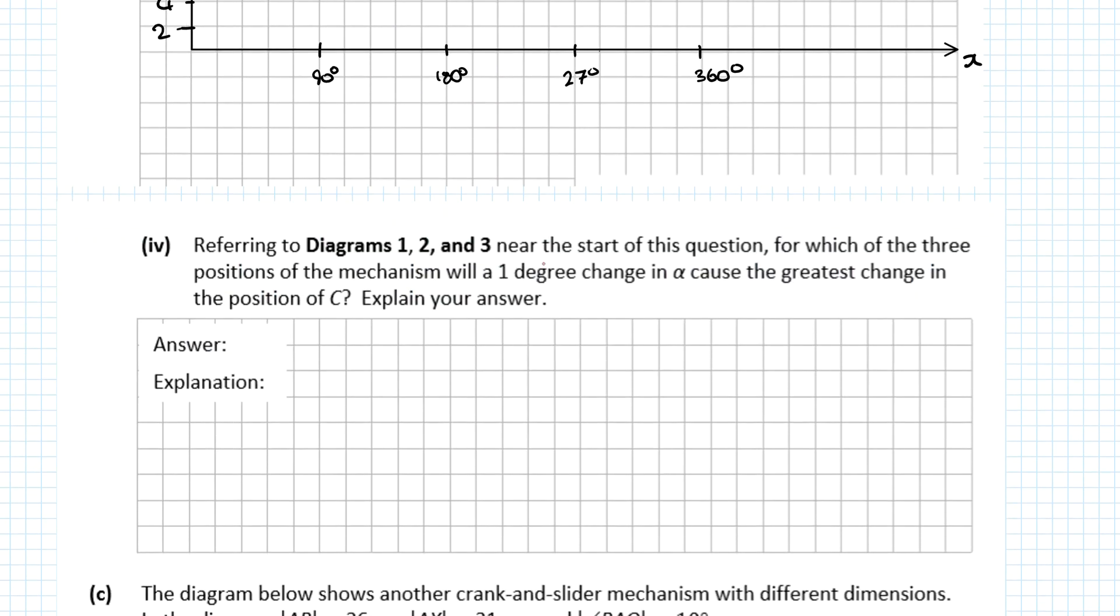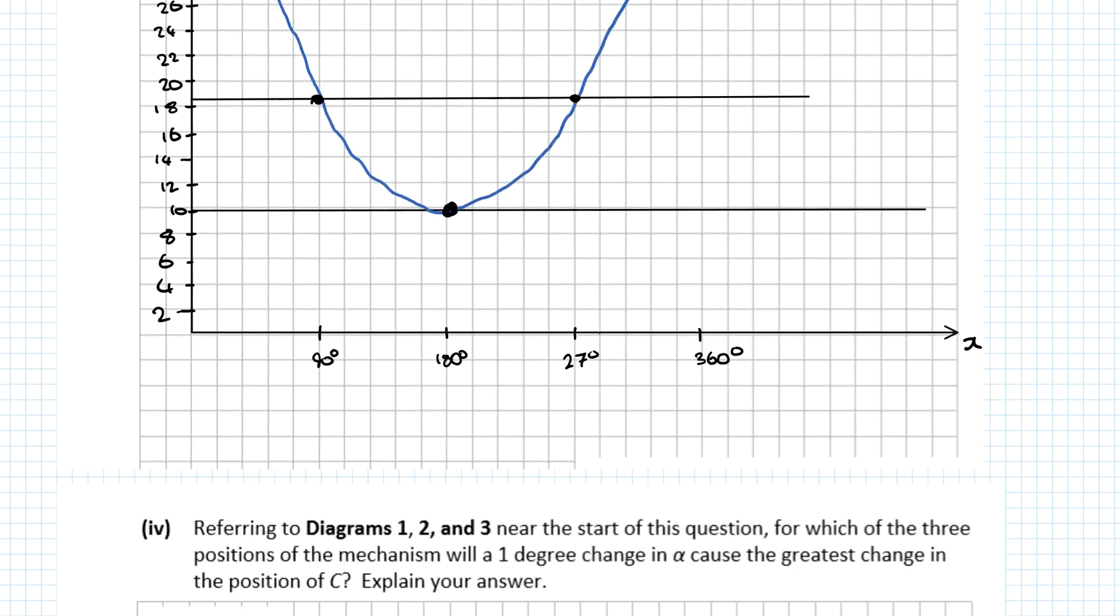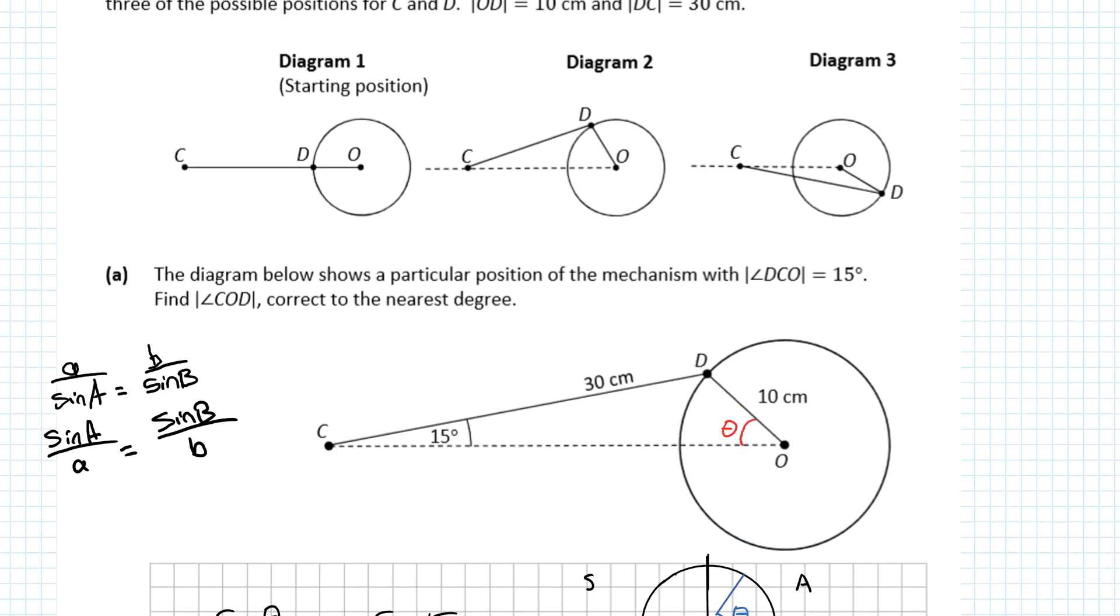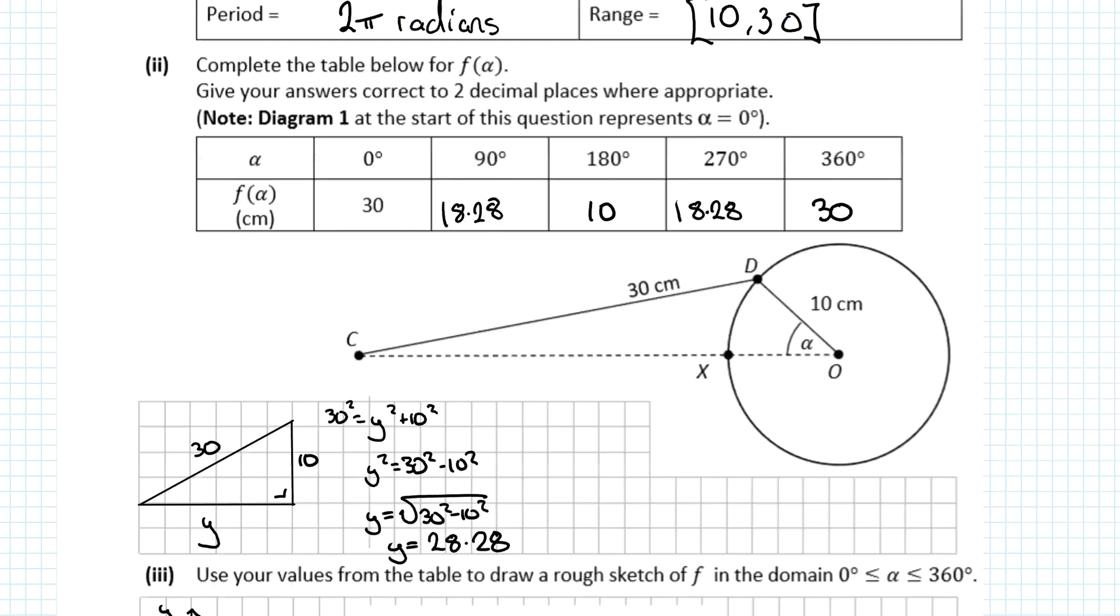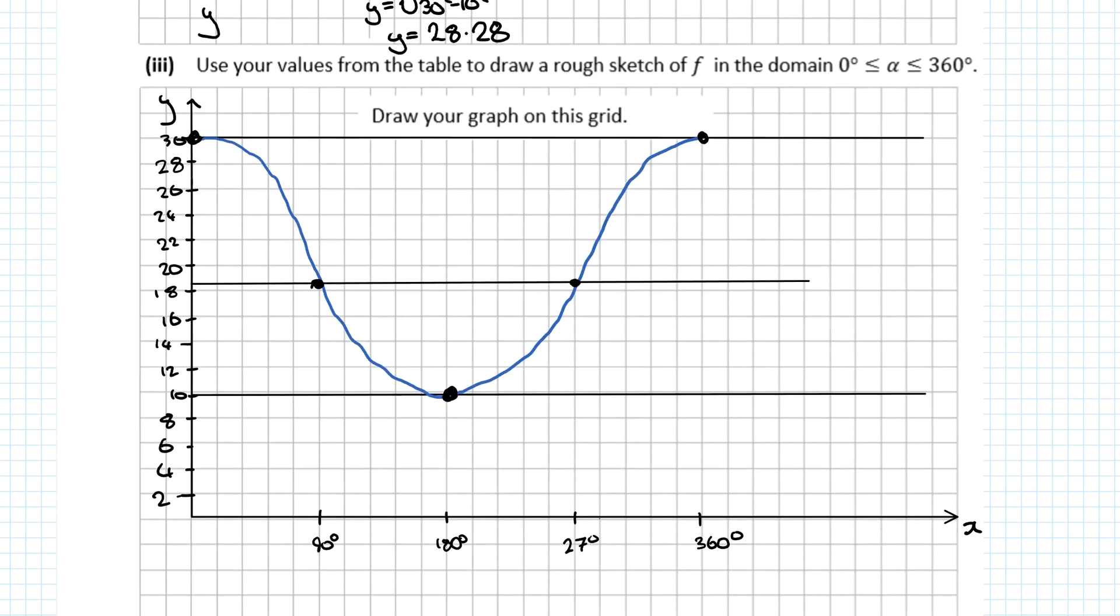Next question: referring to diagrams 1, 2, and 3, for which of the three positions will a 1° change in α cause the greatest change in position of C? Going back to the start, this was α = 0°, this was α ≈ 70°, and this was α ≈ 210°. We're looking at the rate of change - the slope of the tangent lines formed on the graph.